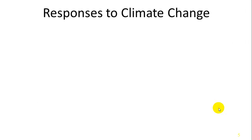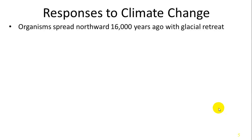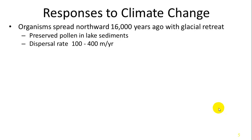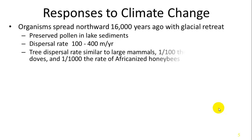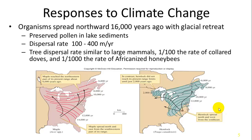Some populations also respond to climate change. Natural climate change occurs over tens of thousands of years. In the past 16,000 years, we've had glacial retreat, glacial melt, and exposure of land. As the earth has been warming, more southern species in the northern hemisphere are now shifting or expanding their populations northward. Evidence of this appears in pollen in lake sediments, which has changed over time. The dispersal rate for plants is much smaller, about 100 to 400 meters per year, similar to large mammals but much slower than collared doves and exponentially smaller than the rate of Africanized honeybees.